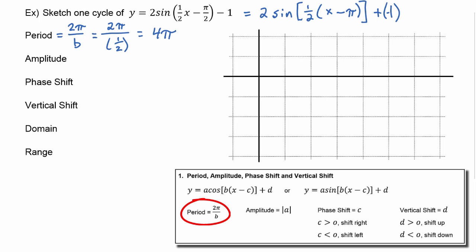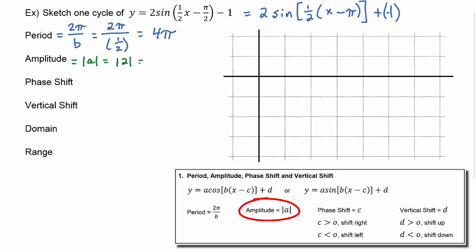So we've got two pi divided by one half, and that's going to equal four pi. So the period of this function is four pi — that's how long it takes from start to end. The amplitude is going to be the absolute value of a, and we can see that a is equal to two, so the amplitude is two.